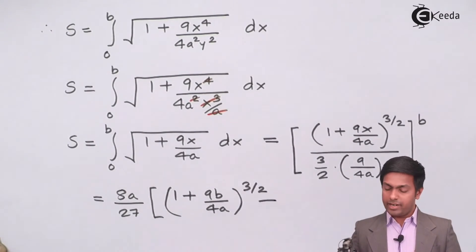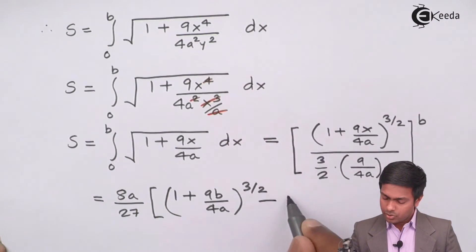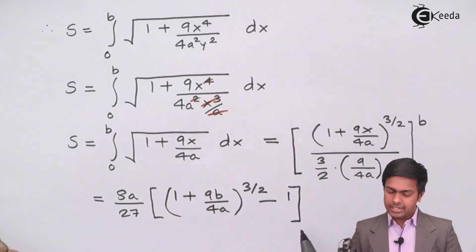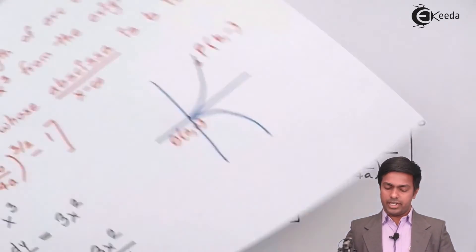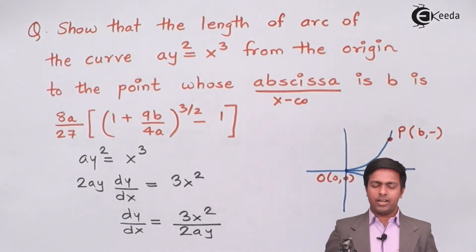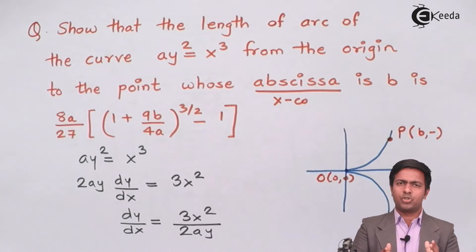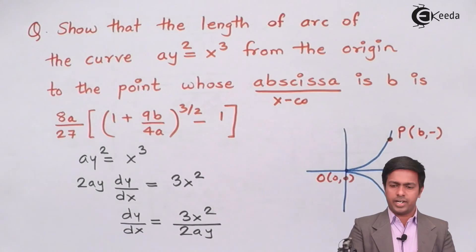Then middle sign minus and when I will put lower limit as 0 this term will become 0 and 1 raise to 3 upon 2 is 1. So here we will get 1. And if you observe the question then we got the required result. So here we have proved that the given length of curve is 8a upon 27 into 1 plus 9 b upon 4 a raise to 3 by 2 minus 1. So I am sure you understood how I got the curve from the basic graphs that we have studied.